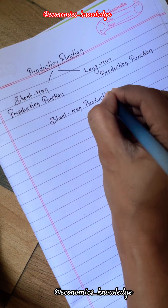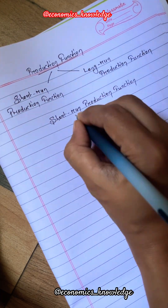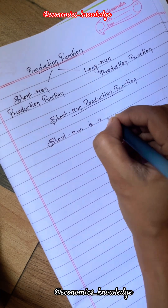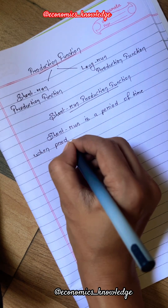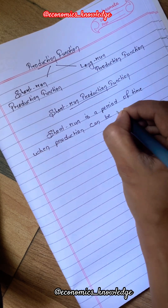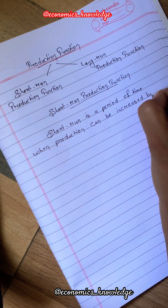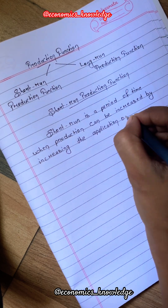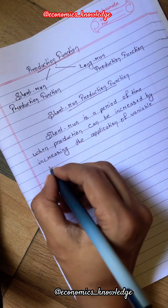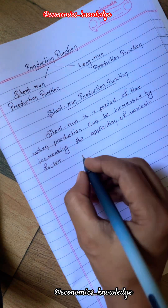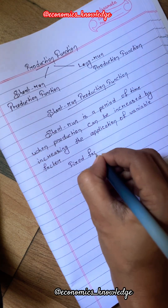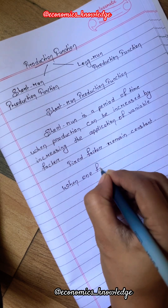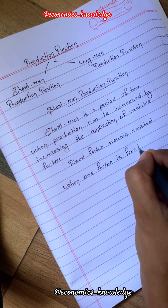Let's see first what is short run production function. Short run is a period of time when production can be increased only by increasing the application of variable factors. Here fixed factors remain constant. For example, once a plant of a particular production capacity is installed, it cannot be changed during the short period, because the short period is too short to change it.